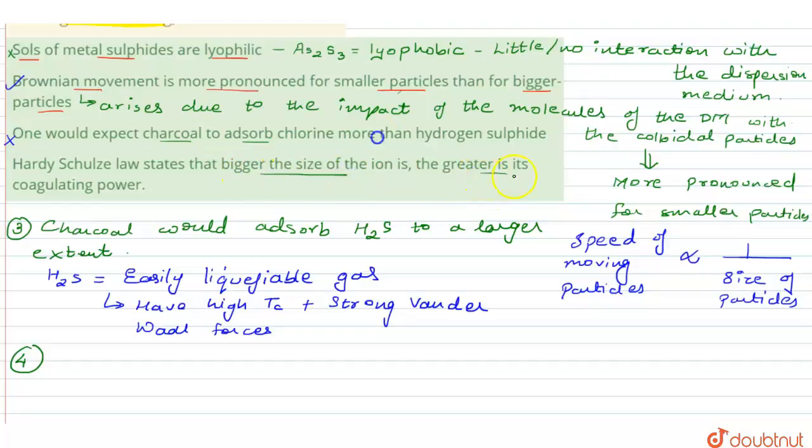The fourth one says that the Hardy-Schulze law states that bigger the size of the ion, greater is its coagulating power. Now first of all what is this Hardy-Schulze law? The Hardy-Schulze law or the rule gives us an idea of the amount of the electrolyte...